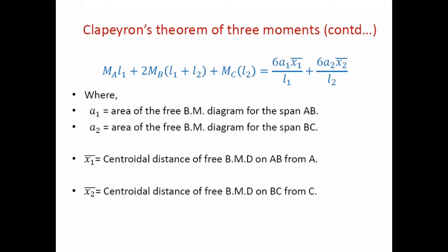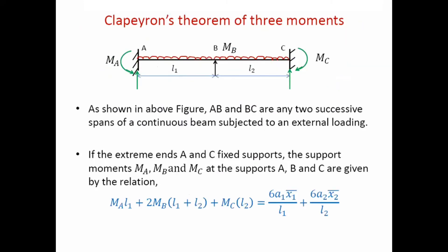x1 bar is the centroidal distance of the free BMD on AB from support A, and x2 bar is the centroidal distance of the free BMD on span BC from support C.